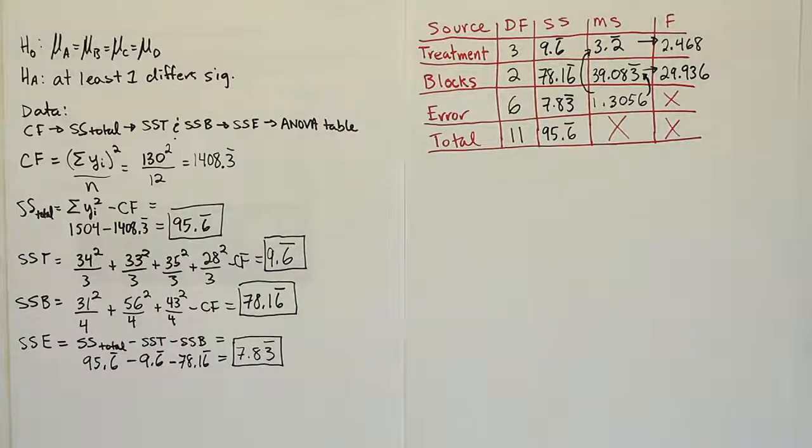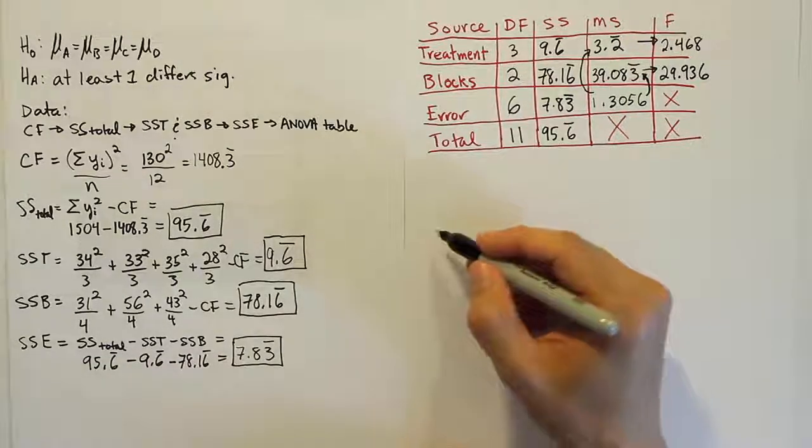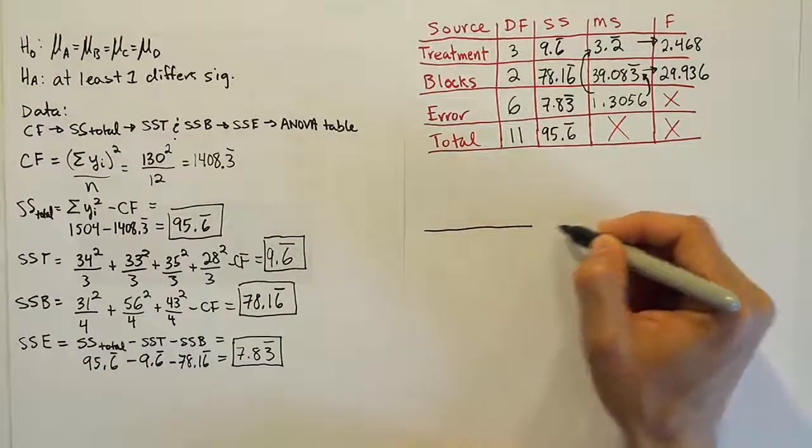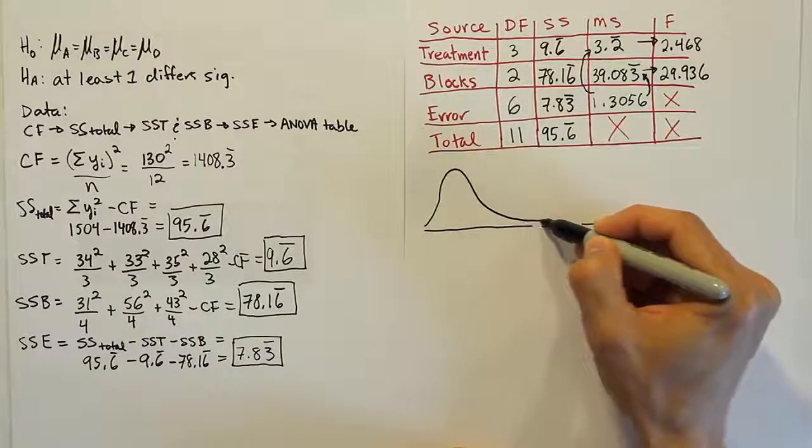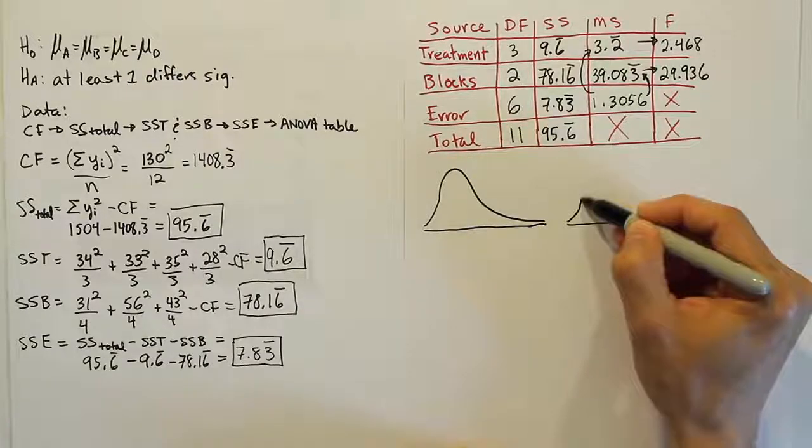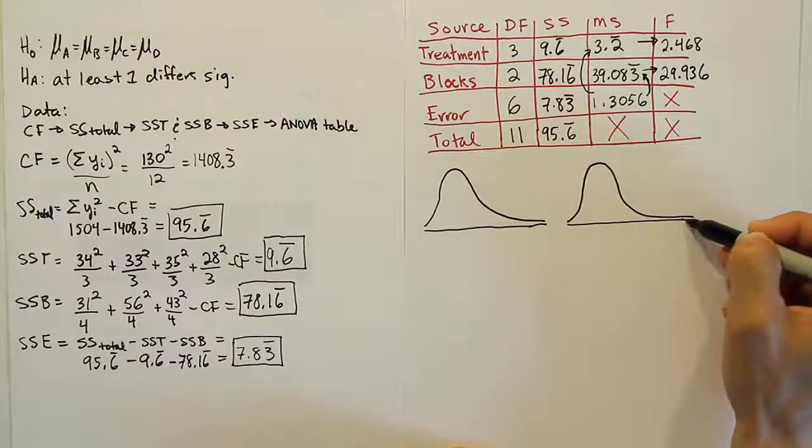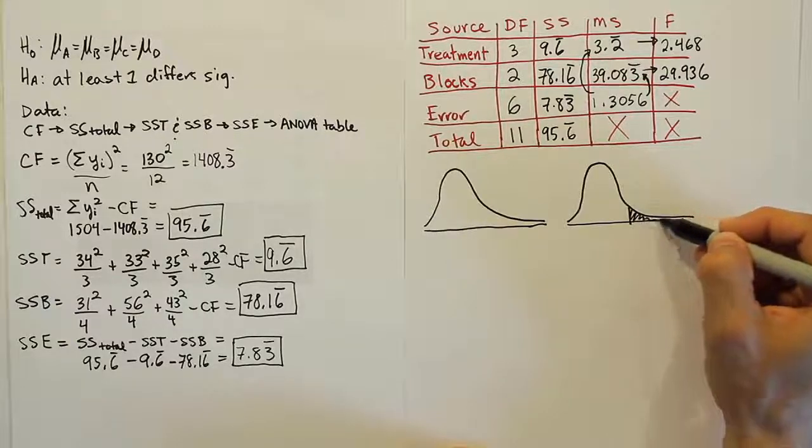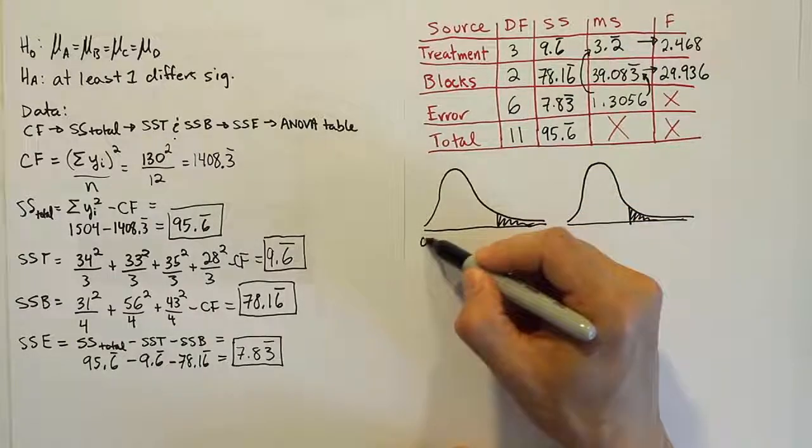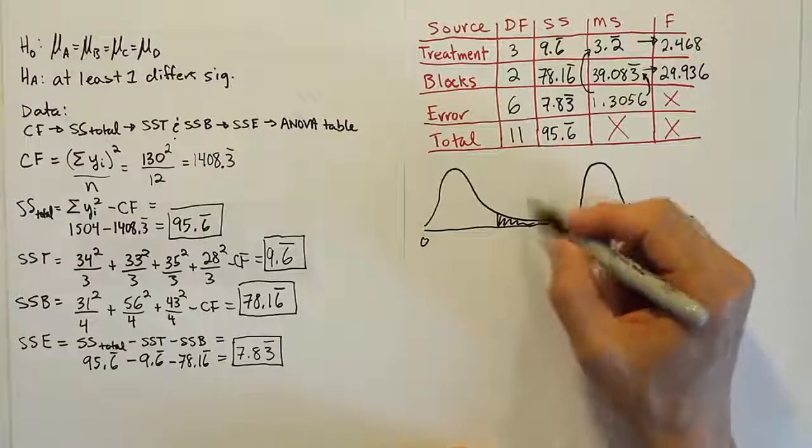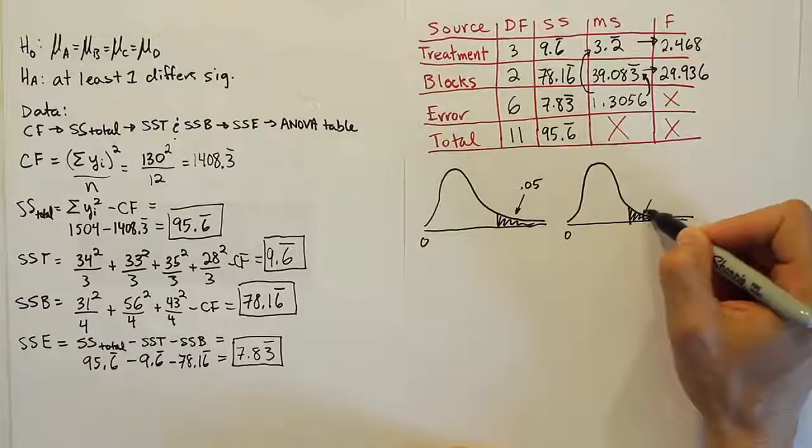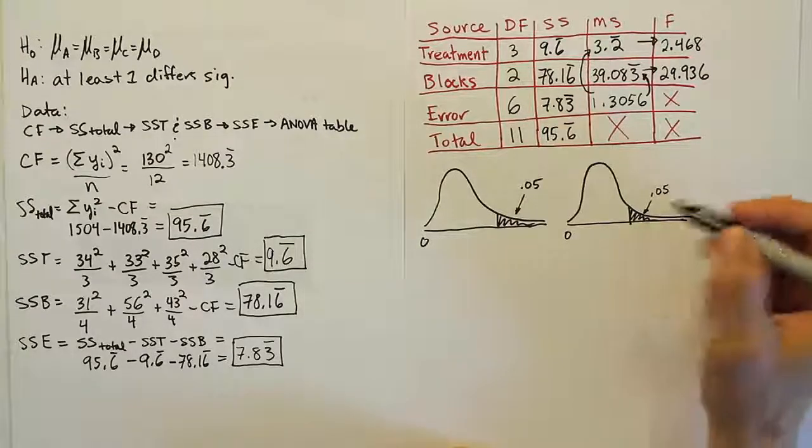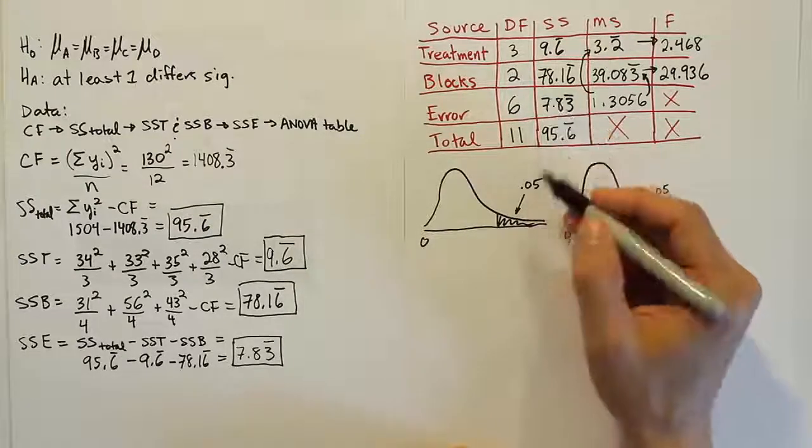Now, from here, what we're going to do is get our critical values, so let's draw our F curves. I'm going to draw two of them here, one for the blocks and one for the treatments. Got my starting points at zero, and then I'm going to have my rejection regions. Let's use 5% alpha for both of them. So, use 0.05 for both of them.